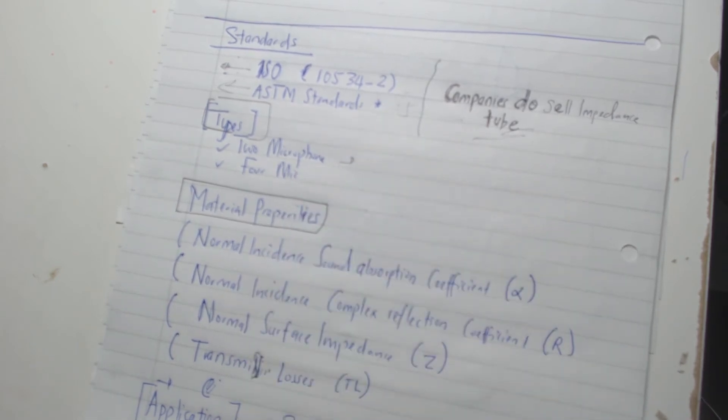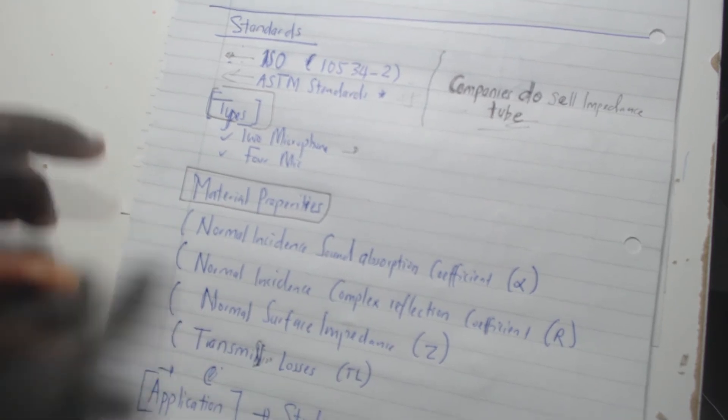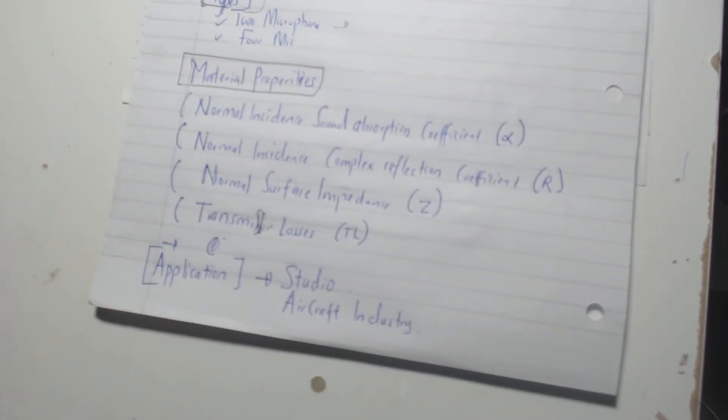You could also get the four microphone impedance tube. Really, they serve the same function, but the four microphone is a lot more sophisticated. You can measure more parameters with it.